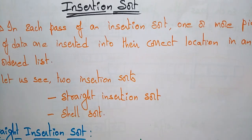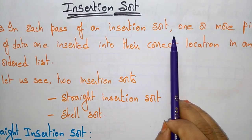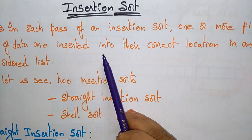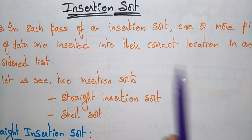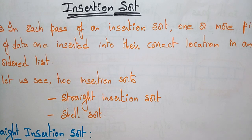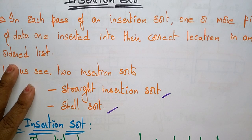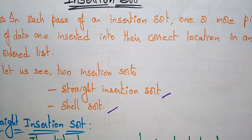Hi students, coming to the next topic in data structures: insertion sort. In each pass of an insertion sort, one or more pieces of data are inserted into their correct location in an ordered list. There are two types of insertion sorts: stride insertion sort and shell sort. These two explain the insertion sort.